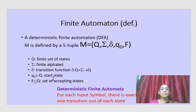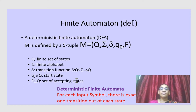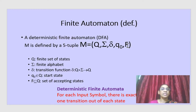q0 is the starting state. For any machine there will be only one starting state. And F is the final state, that is the accepting state. F is a set of final states, meaning it can have more than one final state. That is why we represent it as capital F — a set of final states.